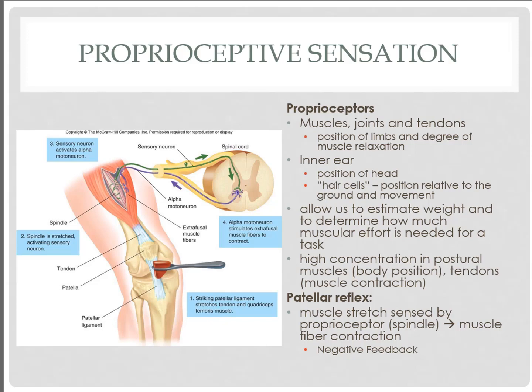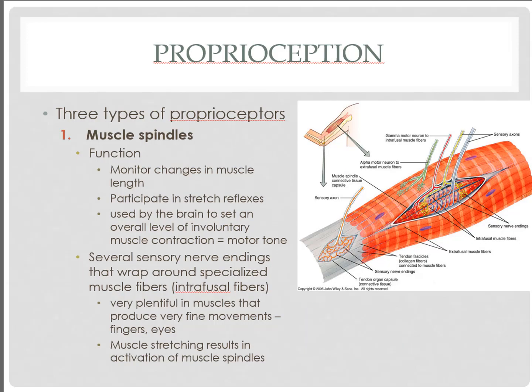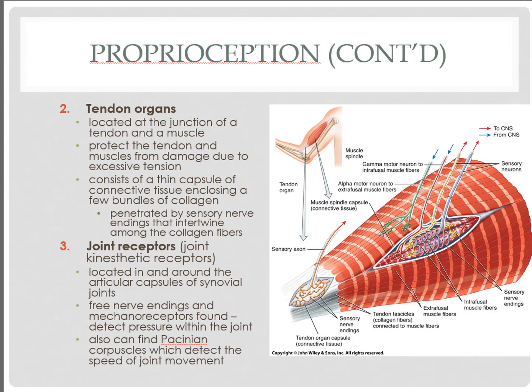The purpose of proprioception is to determine how much muscular effort is needed to perform a task — measured through muscle tension, tendon tension, and receptors in the joint that tell us joint force, position, and angle. An example is climbing stairs: how do we know how much force is needed to move to the next step? All that sensory information from the leg is sent to the cerebellum and cerebral cortex for processing. The three types of proprioceptors are muscle spindles, tendon organs, and joint receptors.